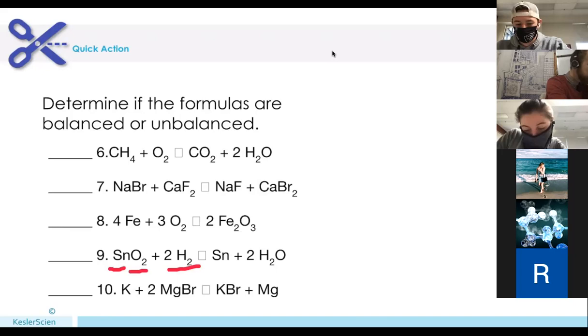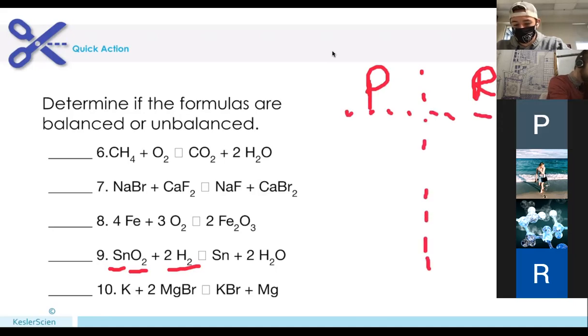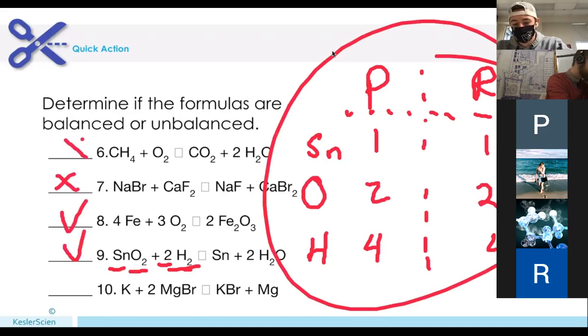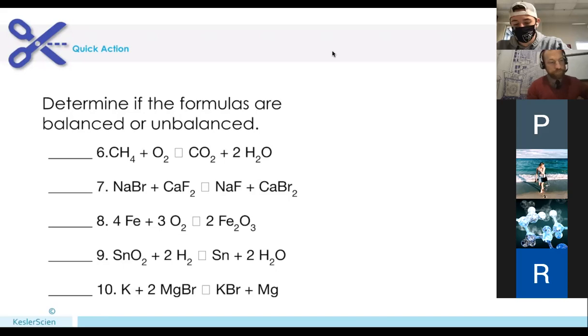Let's check the next one. Tin oxide reacting with hydrogen gas. So in our reactants, we've got tin, we've got oxygen, we've got hydrogen. One tin, two oxygen, two times two is four hydrogen. Two times two, four hydrogen, two times one, two oxygen. Oh, yeah, two in a row. Check, check.